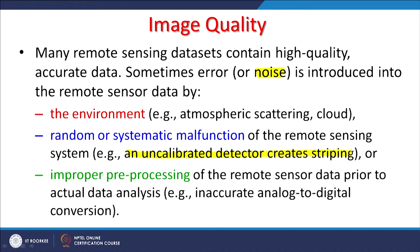Everything is not always reliable, and when we discuss preprocessing of remote sensing data there may be some errors introduced during that stage as well. For example, sometimes images are converted from analog to digital format and errors may be introduced during that conversion. These and a few more things affect the image quality.